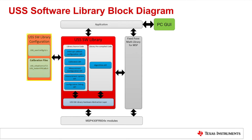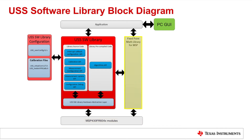The third component is the library configuration files, which give full control over how the APIs are called and configured. The fourth component of the USS Software Library is the hardware abstraction layer, which acts as the intermediary between the library's APIs and the MSP430 MCU's peripherals used by the library. The USS Software Library also interfaces with the MSP IQ Math Library to perform fixed-point operations in an effective and efficient manner.